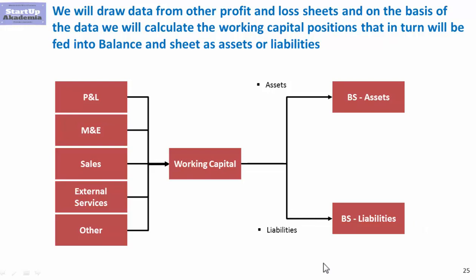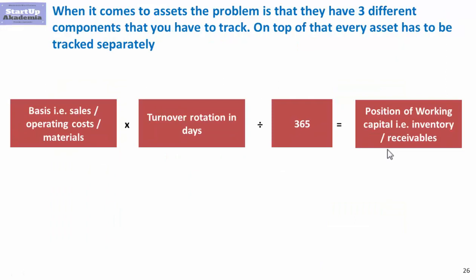In this way, we will almost automatically have those positions generated. In most cases, we will use some sort of basis — it can be sales, operating costs, or materials. We calculate the turnover rotation in days and divide by 365 to get the valuation of the position. We play with the rotation in days to see how we can lower working capital or extend payment terms so liabilities cover assets and cash requirements.